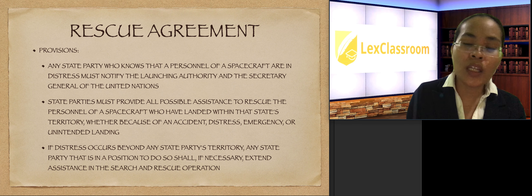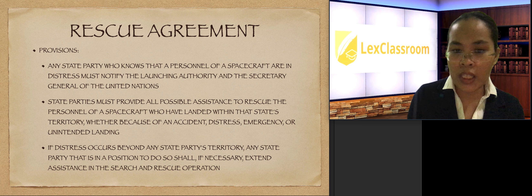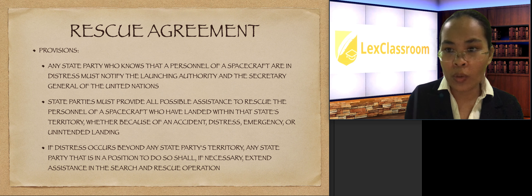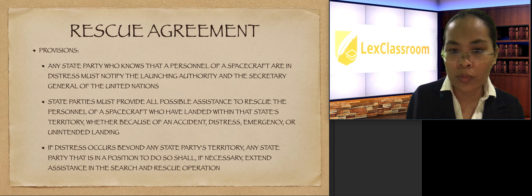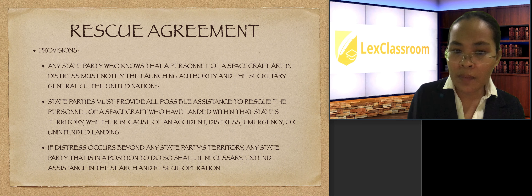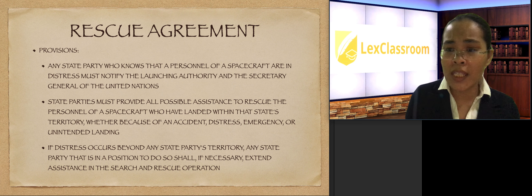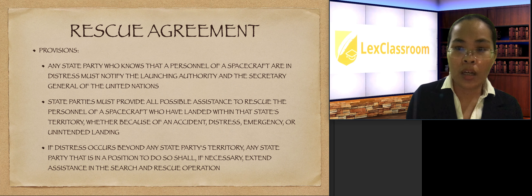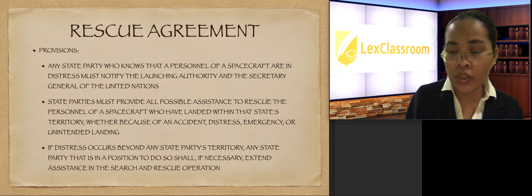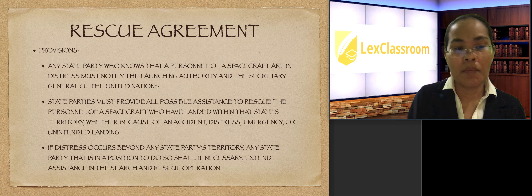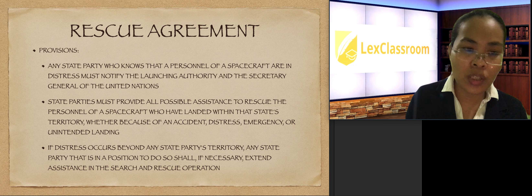If the distress occurs beyond any state party's territory — for example, in the Pacific Ocean, which no one owns — any state party that is in a position to do so must extend search and rescue operations. For instance, if a spacecraft is in distress near the Philippines but beyond its territory, and the Philippines has knowledge of it, the Philippines must provide search and rescue assistance.